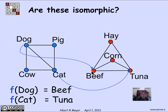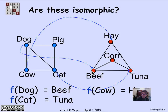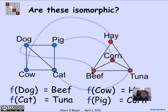Likewise, f of cat — cats eat tuna — I'm going to map cat to tuna. And continuing for the remaining two vertices, I'm going to map cow to hay, which is what they eat, and pig to corn, which is frequently what's fed to pigs. So this is a bijection — a perfect correspondence between the four vertices on the left and the four vertices on the right. But I have to check now that the edges are preserved.